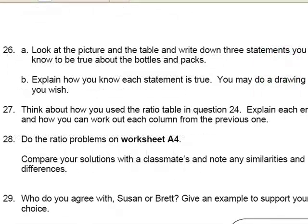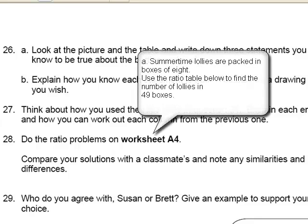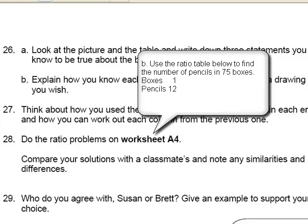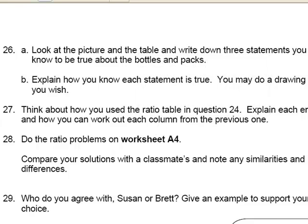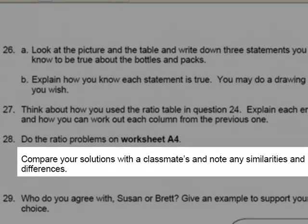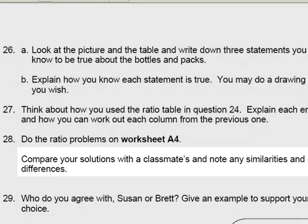Now we've got some practice in question 28 at using ratio tables. On the worksheet you will see there is a box of lollies for part A and a box of pencils for part B. If students are struggling to scale up from one box to ten boxes, they can visualise and talk about those boxes next to each other. Compare your solutions with classmates and note similarities and differences. Many students' preferred option with ratio tables is doubling, while some are happy to go from one up to ten — it's worth sharing and discussing the variety of methods.